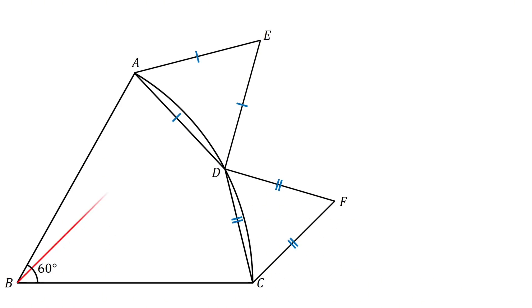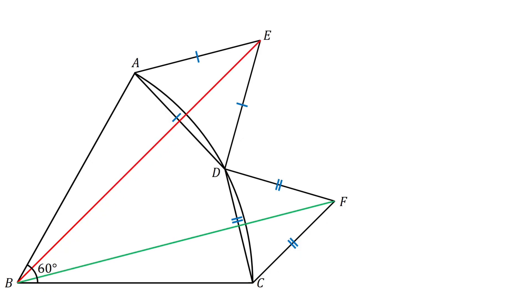Connect B to E and connect B to F. Given that BE equals 10 units and BF equals 9 units, our goal is to find the radius of the circle.